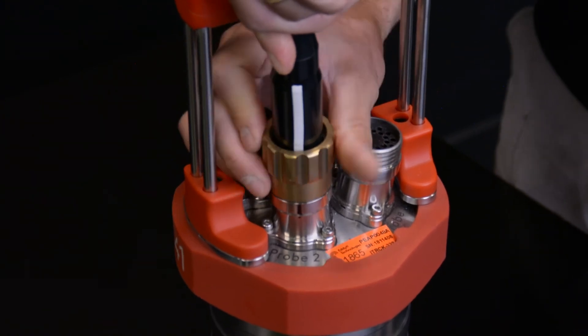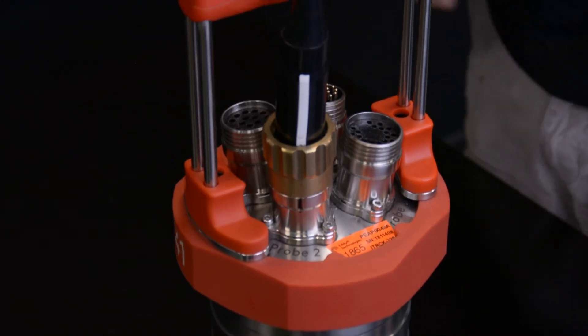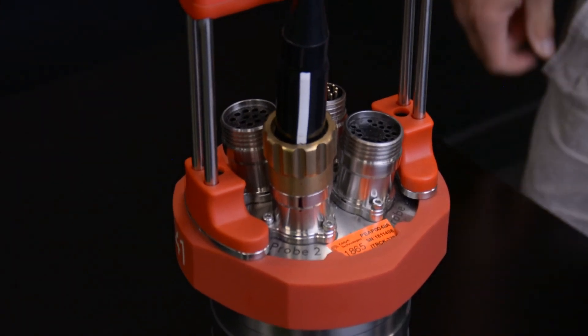Any unused probe connections must have a blanking connector fitted before the unit is deployed subsea, or severe damage will be caused to the connector and unit.